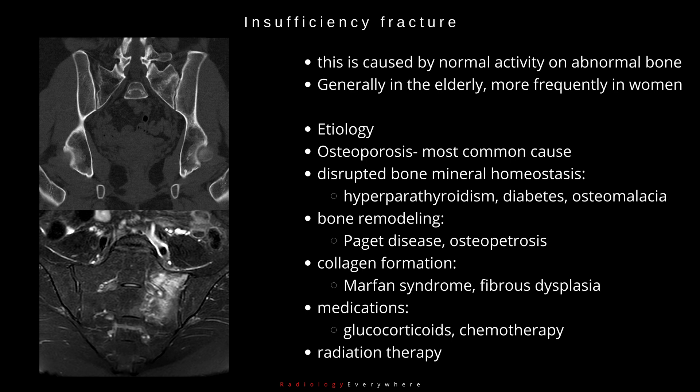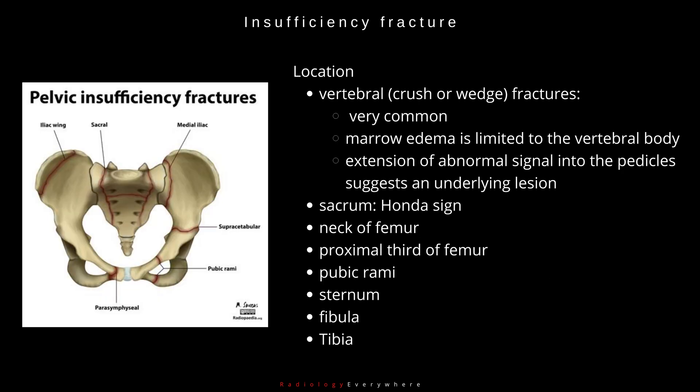Insufficiency fractures can also occur with medications including glucocorticoids, chemotherapy, and radiation therapy. Major locations include the vertebra — which can be either crush or wedge fractures — where marrow edema is limited to the vertebral body. Extension of abnormal signal into the pedicle suggests an underlying lesion. Other locations include the sacrum (where you can see the Honda sign), neck of femur, proximal third of femur, pubic rami, sternum, fibula, and tibia.